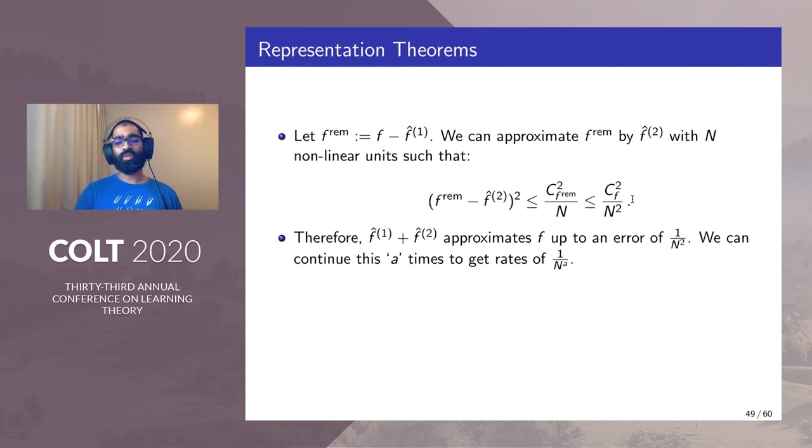From this it is easy to conclude that the error of f̂₁ + f̂₂ with respect to the original function f is at most 1/n². We can continue this a times to get rates of 1/n^a.